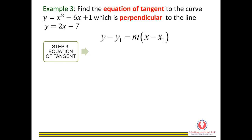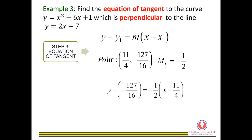Next, find the equation of tangent using the formula y minus y1 equals m times (x minus x1). With point (11/4, −127/16) and gradient negative 1 over 2, substitute to get y minus (negative 127 over 16) equals negative 1 over 2 times (x minus 11 over 4). Rearrange to get the equation of tangent: y equals negative 1 over 2 times x minus 105 over 16.